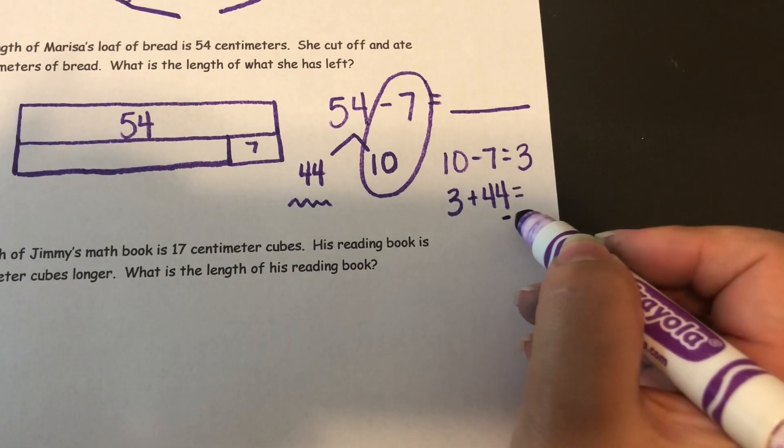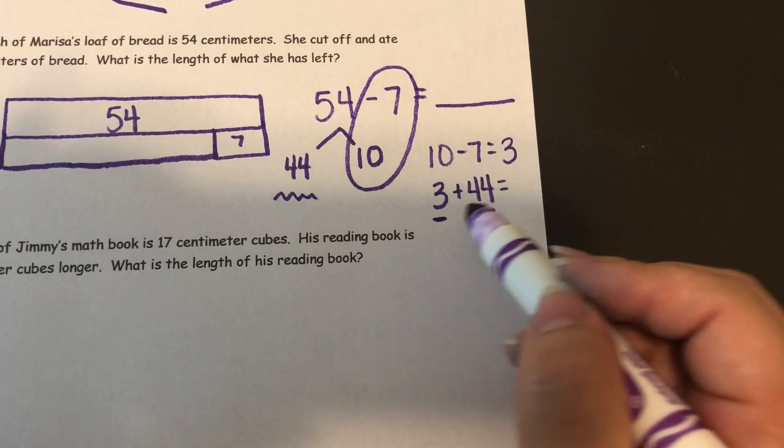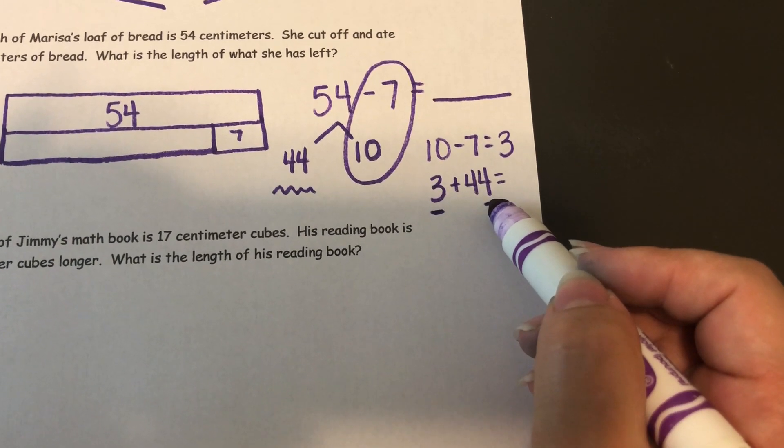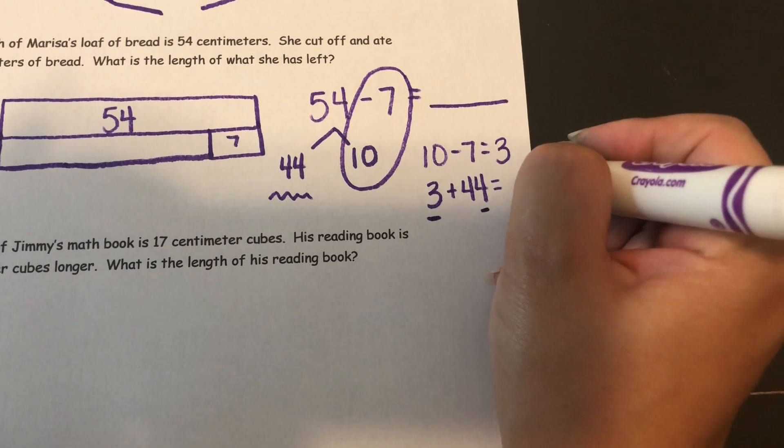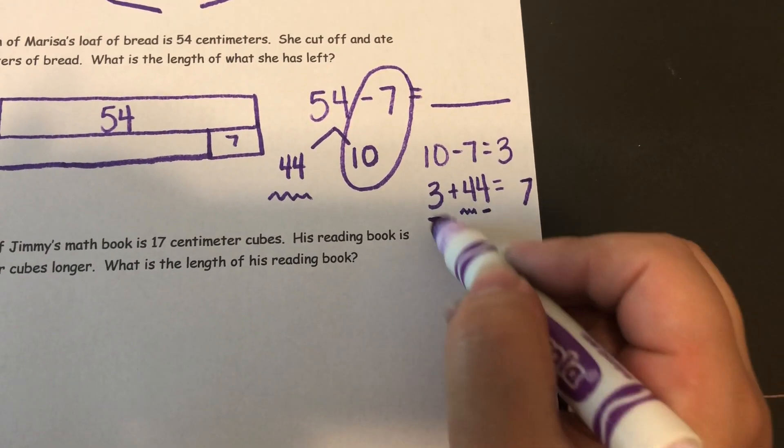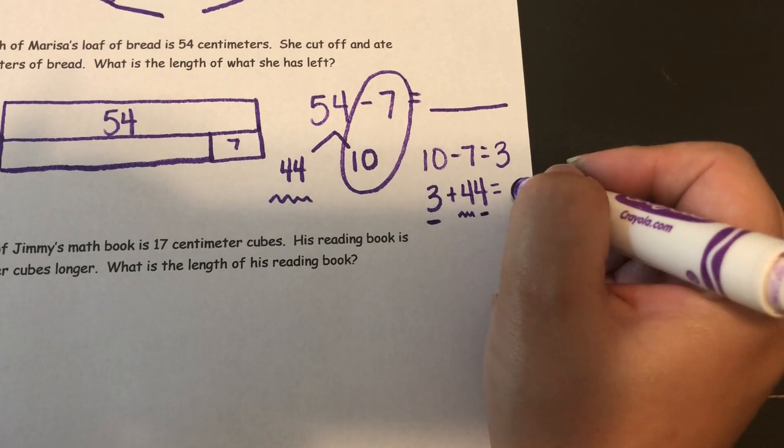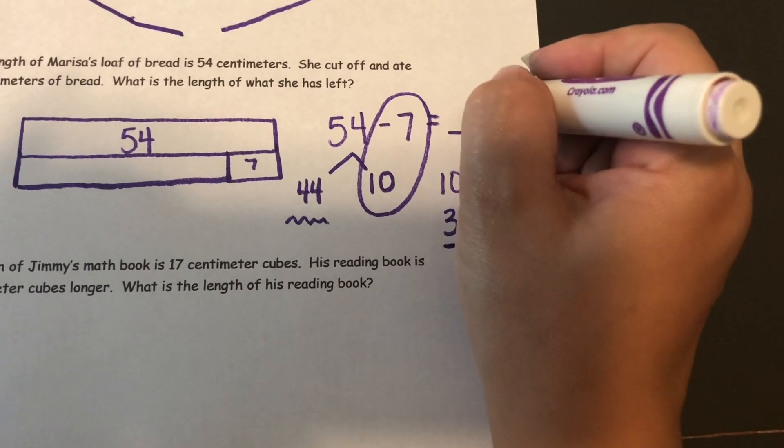3 plus 44. So 4 ones plus 3 ones. Well, I know 3 plus 3 would be 6, so 3 plus 4 would be 1 more than 6. It would be 7. And now I have 4 tens and there's no tens in this number, so I just have 4 tens, which gives me the answer of 47.